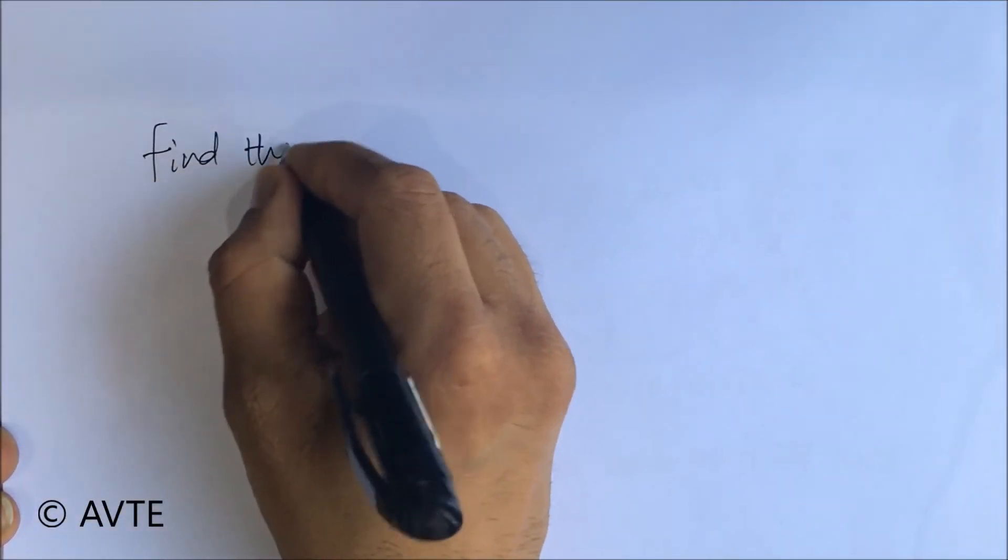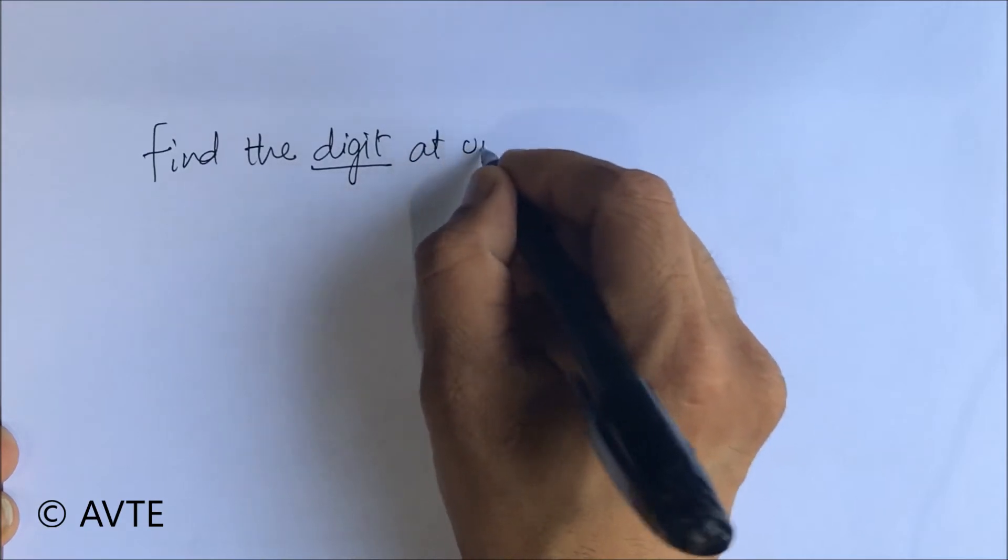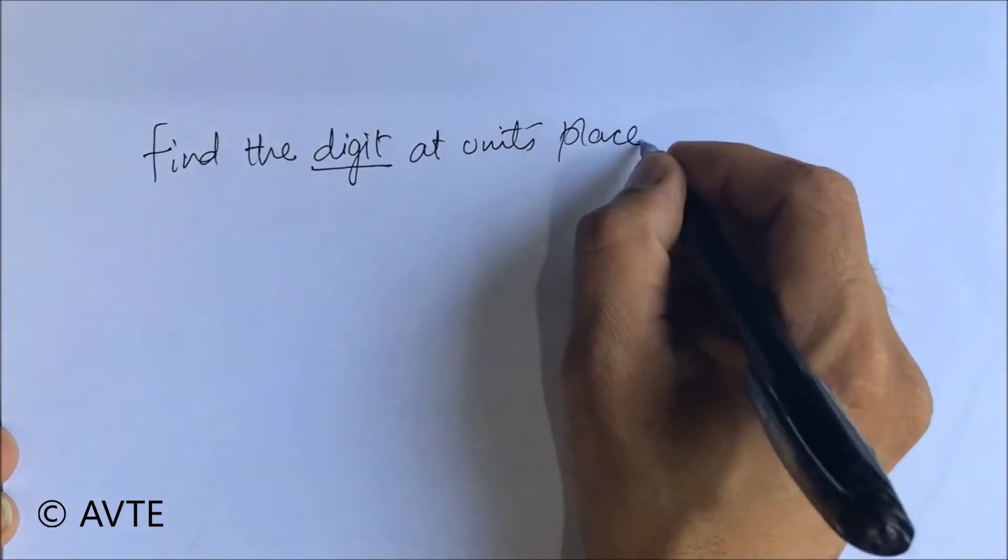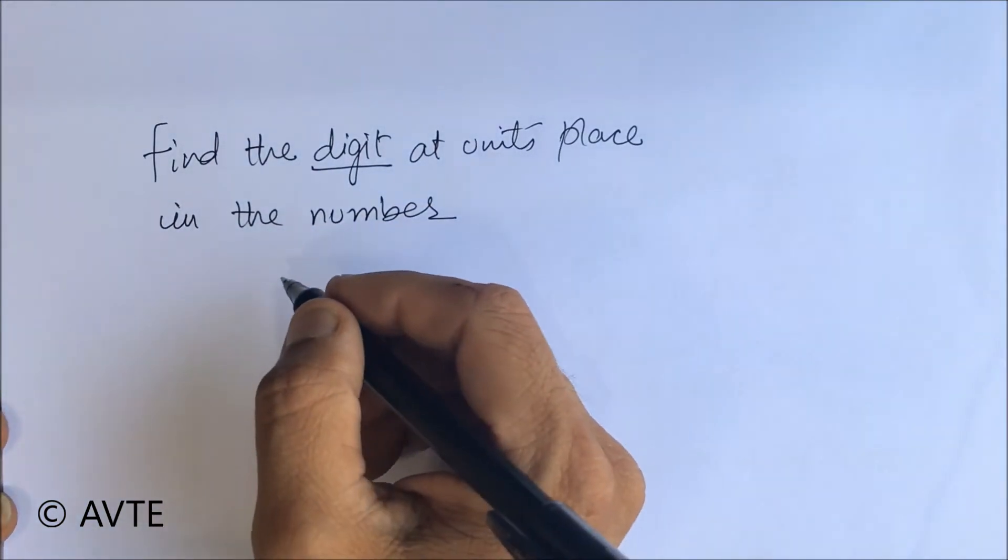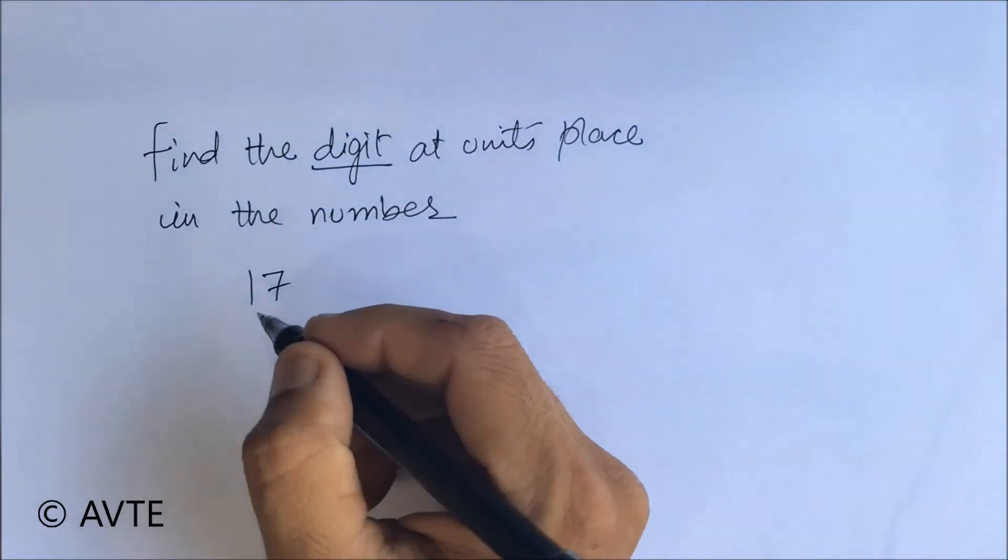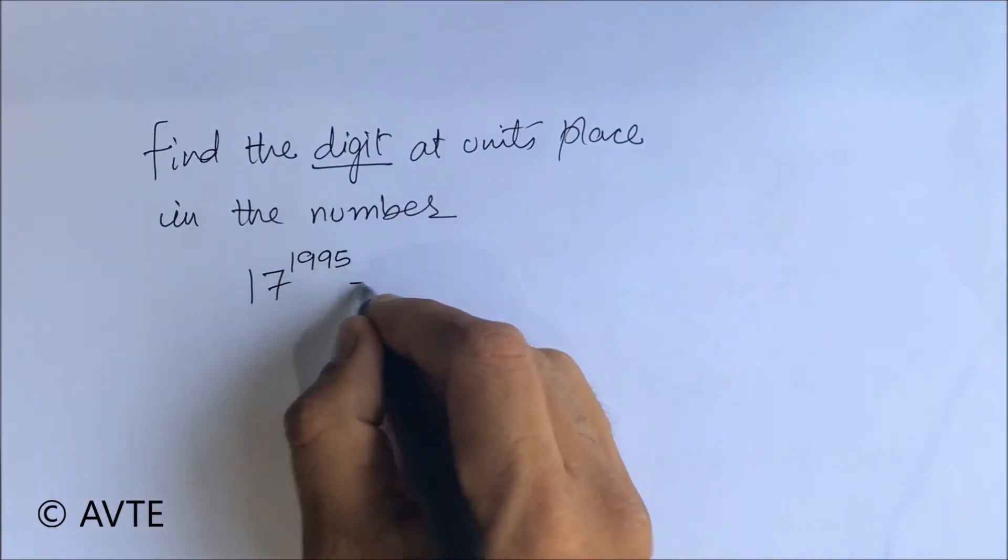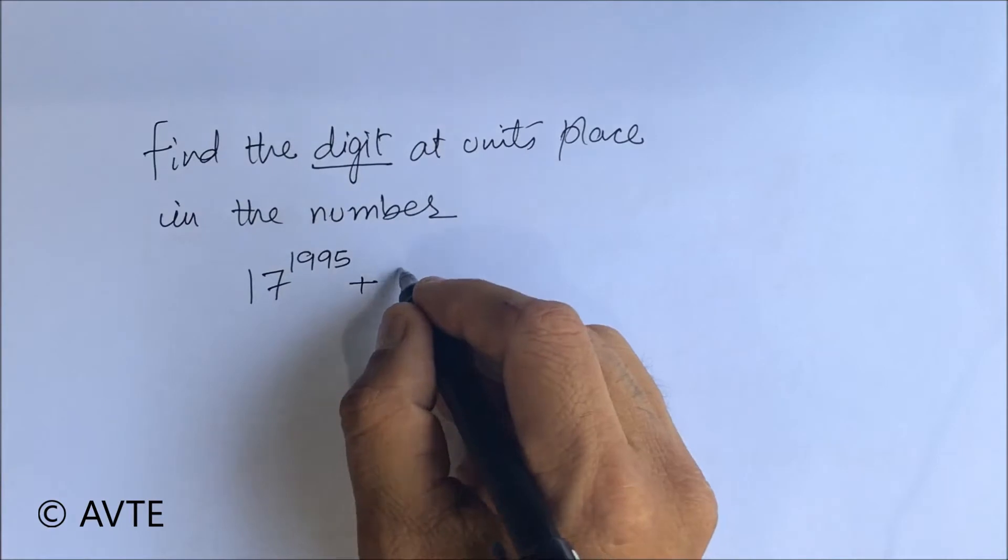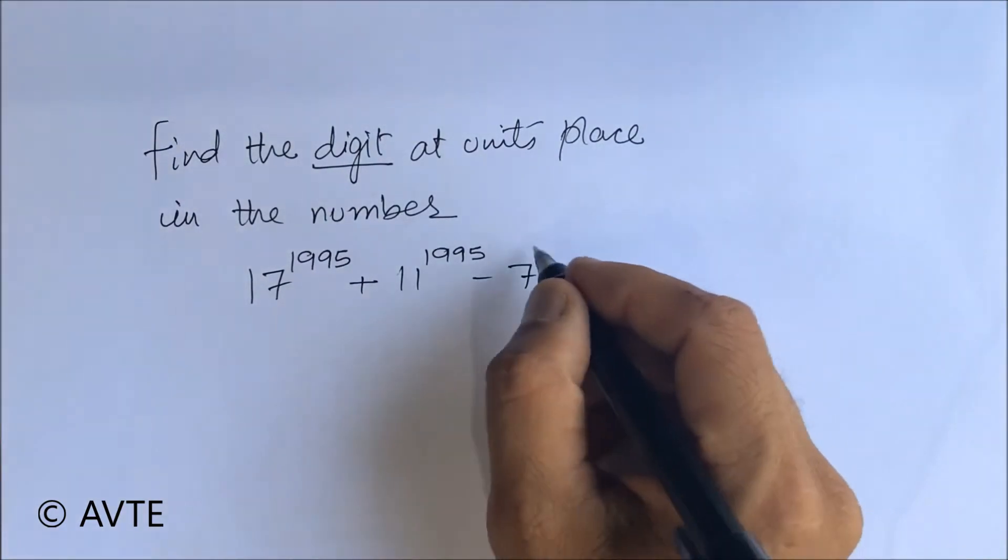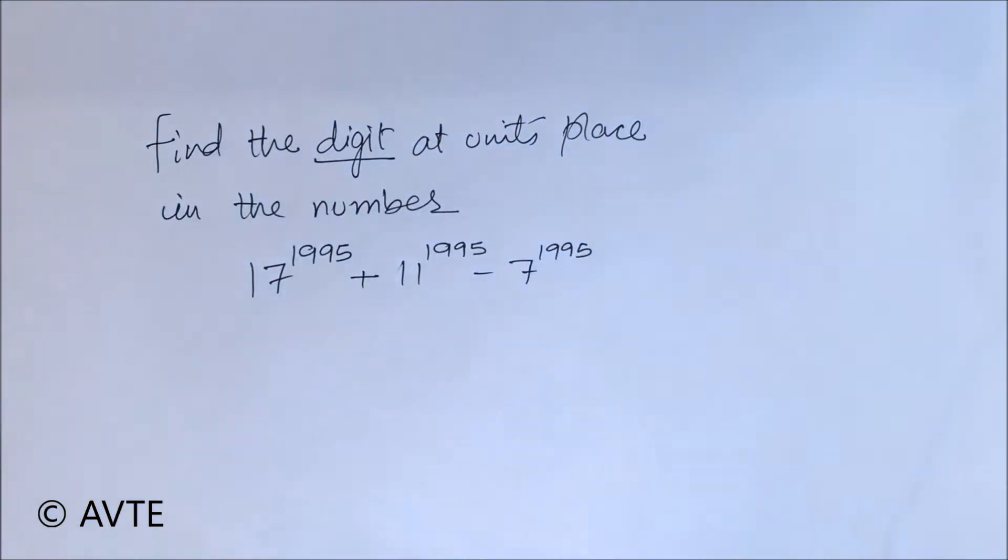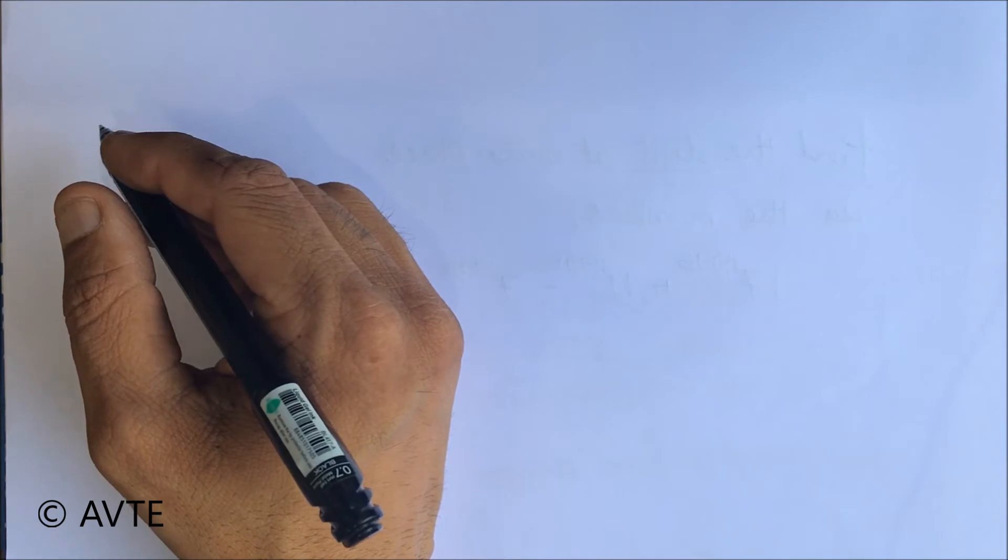Find the digit at units place in the number 17 raised to power 1995 plus 11 raised to power 1995 minus 7 raised to power 1995. Obviously it's a trick question and the secret lies in binomial theorem.